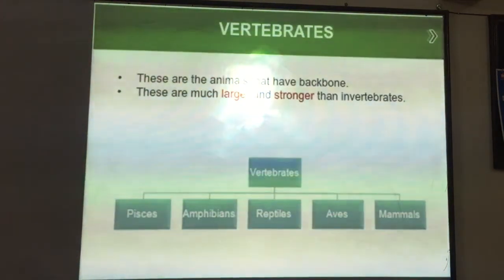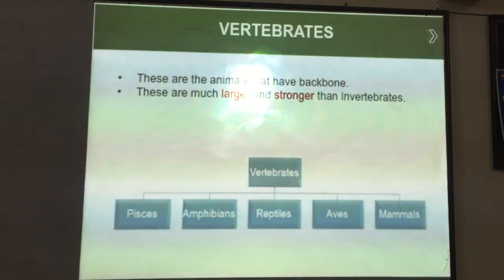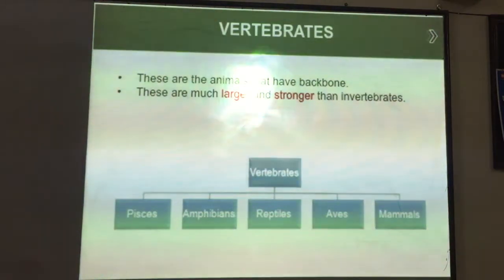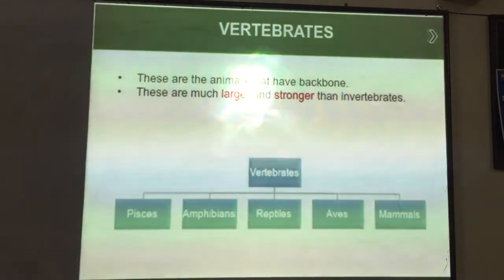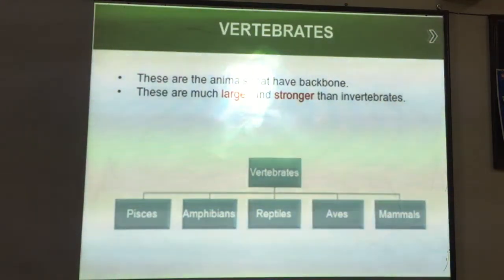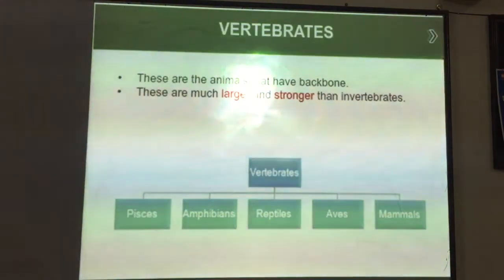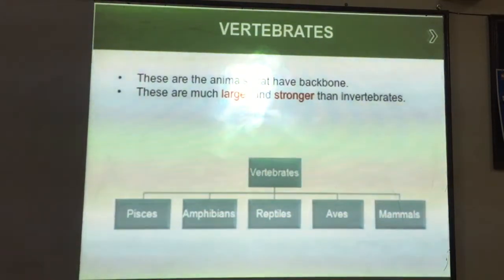Vertebrates are further divided into five types. The animals that have a backbone are divided into five types. They are much larger and much stronger than invertebrates. So vertebrates can be divided into five different types: fishes, amphibians, reptiles, aves, and mammals. Now we will discuss these vertebrates one by one.